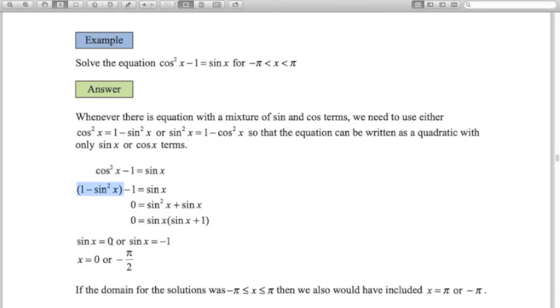So if sine of x equals 0, we've got 0 degrees, or 0 radians in this case. And sine of x equals minus 1, if you think of your unit circle, minus 1 on the y-axis is 3 pi over 2 or minus pi over 2. Given what the range is up here, from minus pi to pi, we want to give that answer as minus pi over 2.